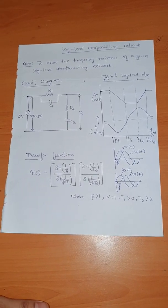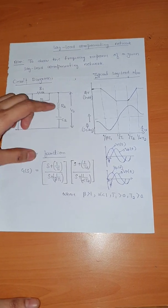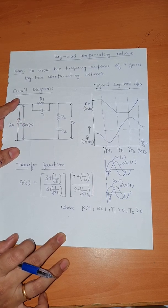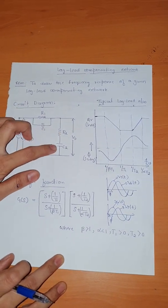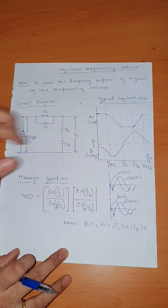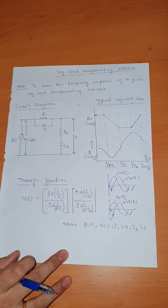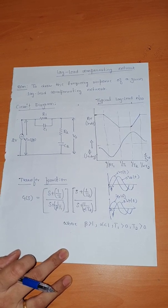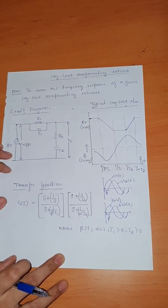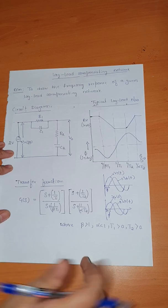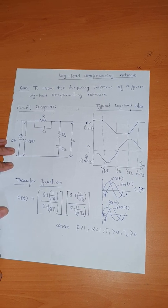A lag compensating network improves the steady state response of the system. Looking at the circuit diagram for the lag-lead compensating network, resistance R2 is connected in series with the capacitor and connected across the output side — these two components act as a lag compensating network. The purpose of the lag compensating network is to improve the steady state response, and it acts as a low pass filter, which allows only lower frequency signals and eliminates higher frequency signals.